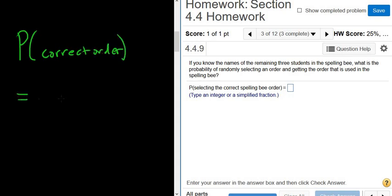Okay, so it's a fraction. So it's the number of ways to pick the correct order divided by the number of ways to arrange three people. So there is one way to pick the correct order. You pick the correct order.